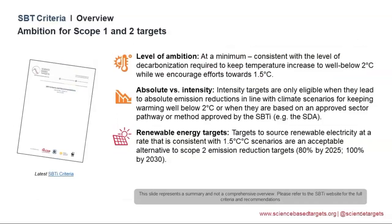For scope 1 and 2 targets, you choose either a well-below-2°C pathway or a 1.5°C-aligned pathway. Intensity targets are eligible only when they lead to absolute emission reductions in line with those climate scenarios, or they fall under our Sectoral Decarbonization Approach. Renewable energy targets are also part of the program — for example, sourcing 80% renewable electricity by 2025 or 100% by 2030 are consistent with 1.5°C-aligned scenarios.